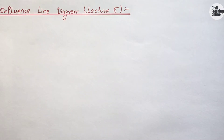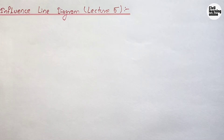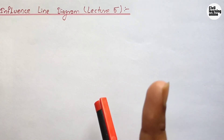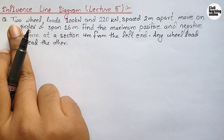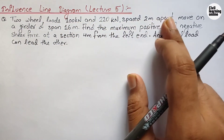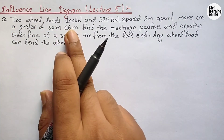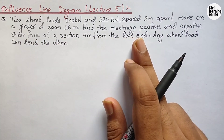To learn how to calculate the maximum positive and maximum negative shear force, we'll work through numerical examples — one for a point load and one for a UDL. The first question: two wheel loads of 100 kN and 220 kN, spaced 2 meters apart, move on a girder of span 16 meters. Find the maximum positive and negative shear force at a section 4 meters from the left end.